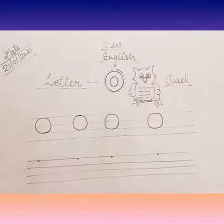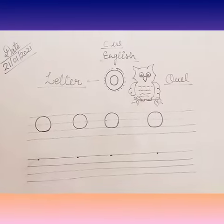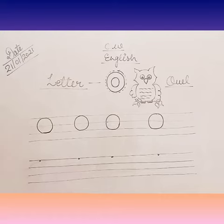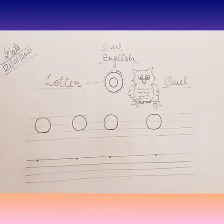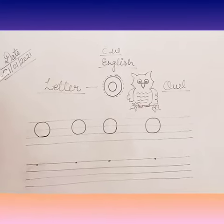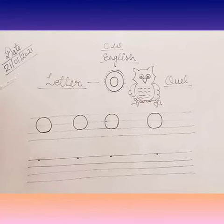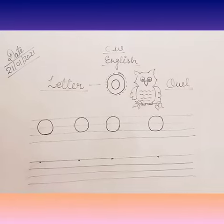Good morning nursery kids, welcome to today's session. In English today we will do letter O with a dot. Start with the date 21st month 2021, then you will write class, and write letter O — O for out.